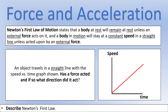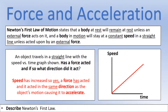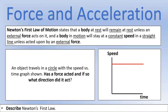Here's a scenario: an object traveling in a straight line with the speed versus time graph shown. Has a force acted, and if so, what direction did it act? From the graph, we can see that speed is increasing, so if speed is increasing a force must have acted, and it must have acted in the same direction as the object's motion, which causes it to accelerate.